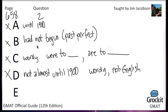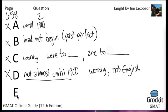Even if we hadn't recognized choice E as correct, identifying errors in choices A through D lets us choose E with confidence. Choice E reads: 'It was not until almost 1900 that scholars and critics seriously began studying.' We have the correct simple past tense — more recent than the past perfect in the first part of the sentence — and no awkward 'not almost until 1900' construction. Choice E is our correct answer.